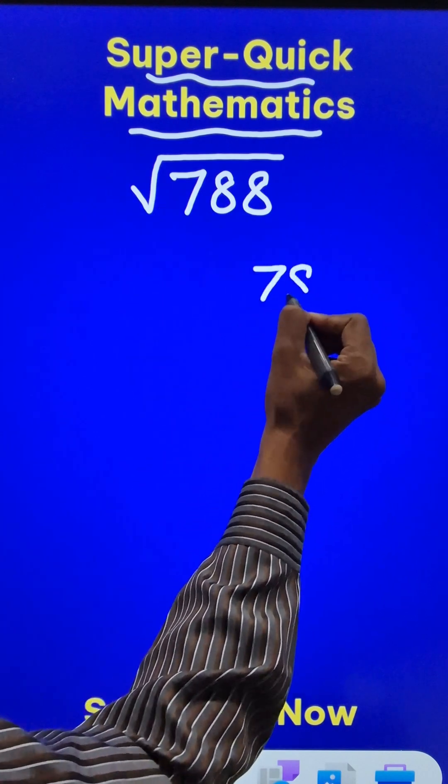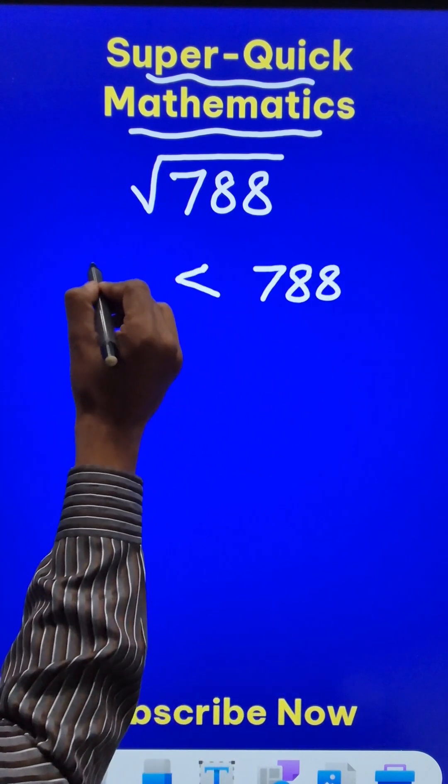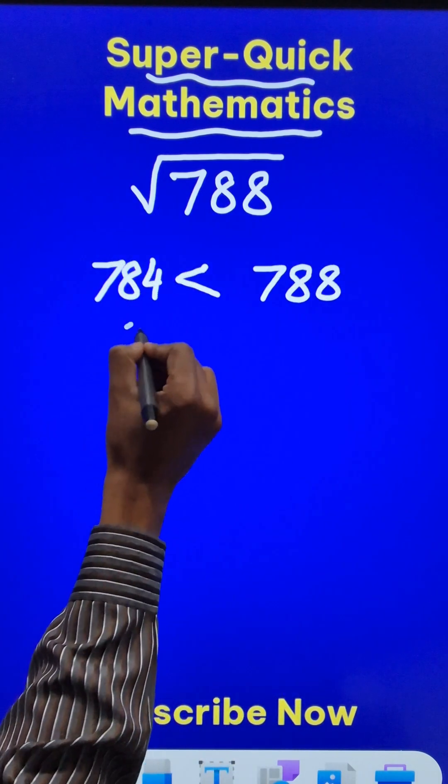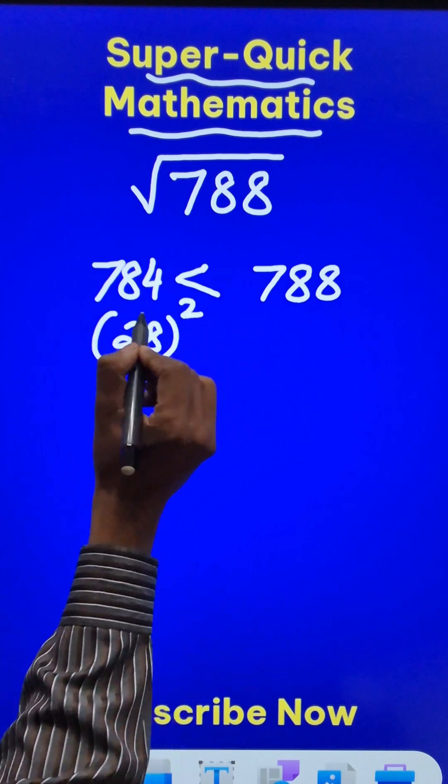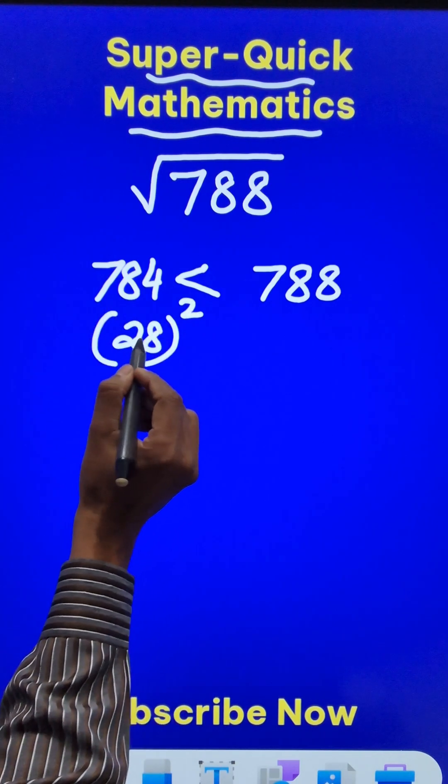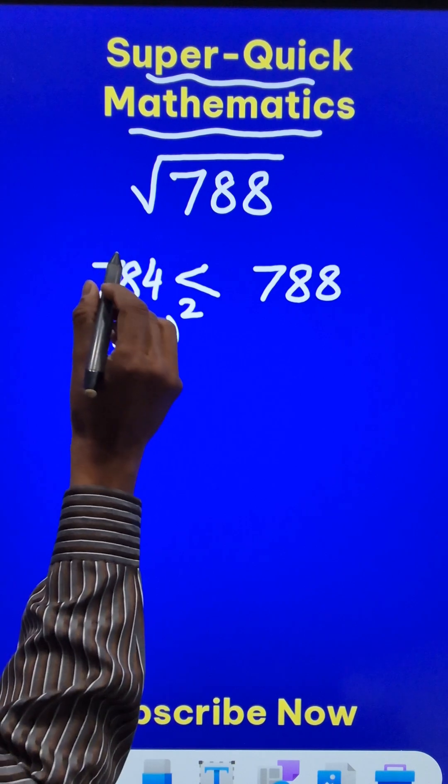Now this number 788 actually is very close to 784 which is 28 square, right? So I need this number 28 and I should know that this is the square root of 784.